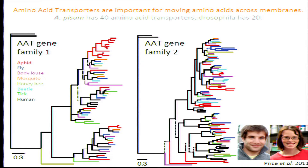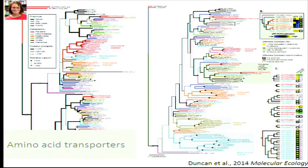Rebecca, as part of her dissertation, set out to test this hypothesis. This paper was published in Molecular Ecology earlier this year. Here's the pea aphid expansion I pointed out on the previous tree. She also looked at other hemipterans, including citrus mealybug, potato psyllid, whitefly, cicadas, and kissing bugs. The thing that jumps out — notice these grey boxes marking independent expansions in amino acid transporters — is that these occur only in Sternorrhyncan insects. This was quite exciting and remarkable.